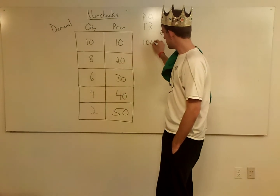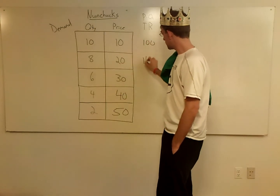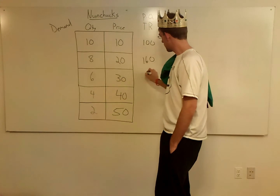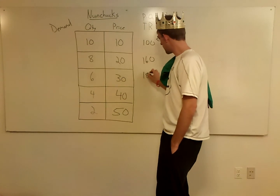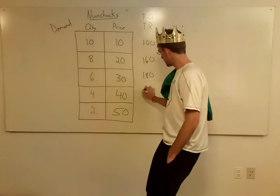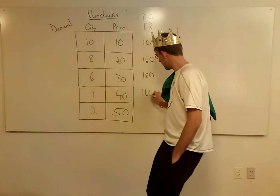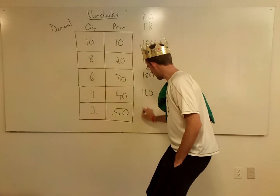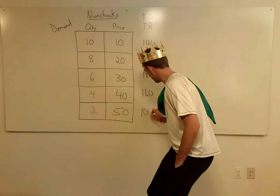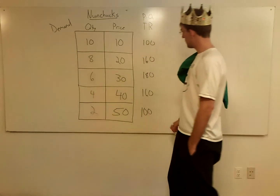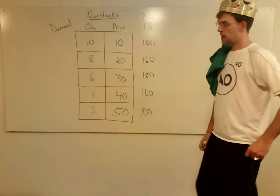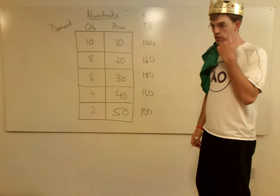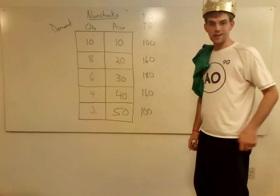So if you just multiply price and quantity together as you go down, you get 100, 160, 180, 160, and 100 again. Now the question is, what does all that mean?